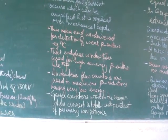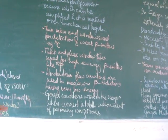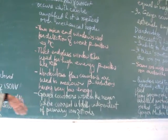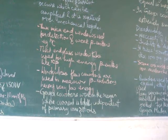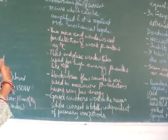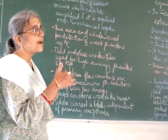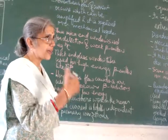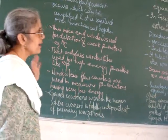Geiger counter works in the region where current is totally independent of primary ionization. It means that all the gas atoms that are present in the tube become ionized and reach the electrodes.